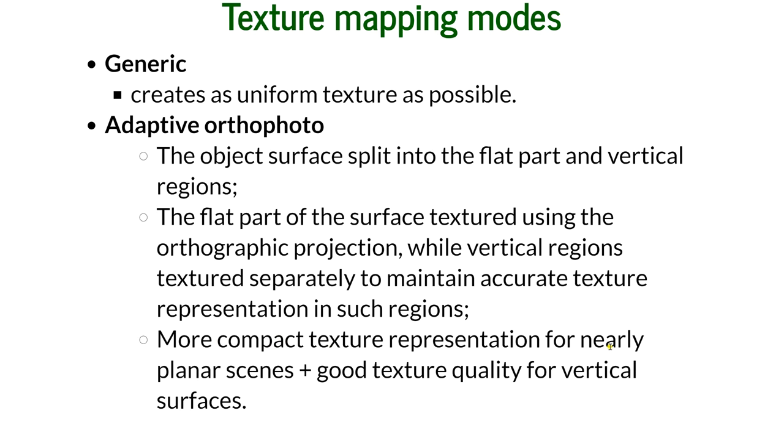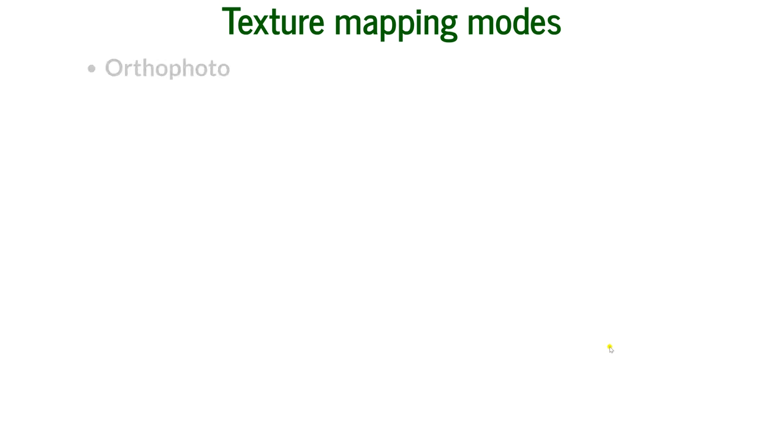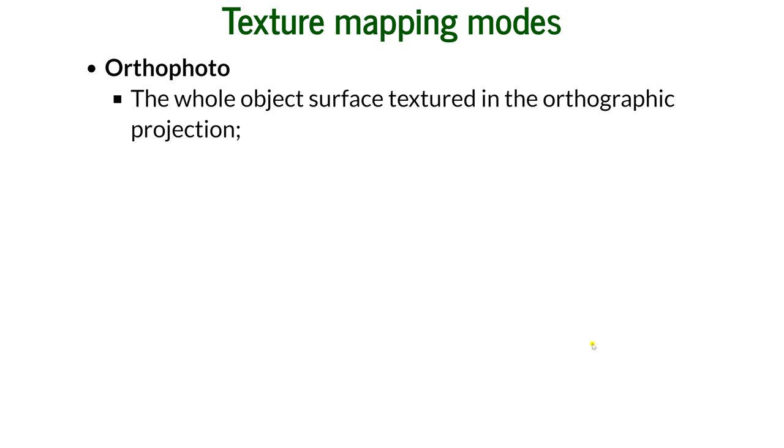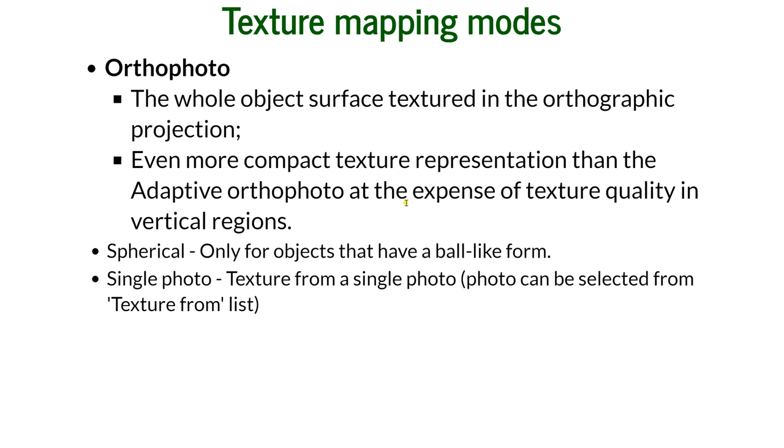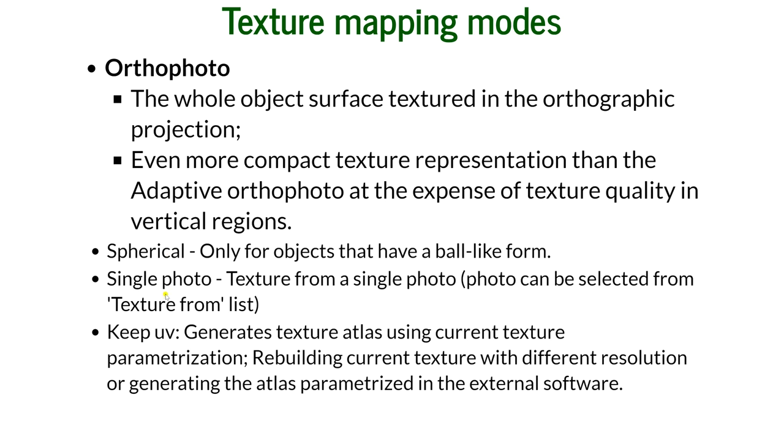Orthophoto is just like adaptive orthophoto but only in planar mode. The whole object surface is textured in the orthographic projection. As a result, even more compact texture representation than adaptive orthophoto, but also at the expense of texture quality in the vertical regions.